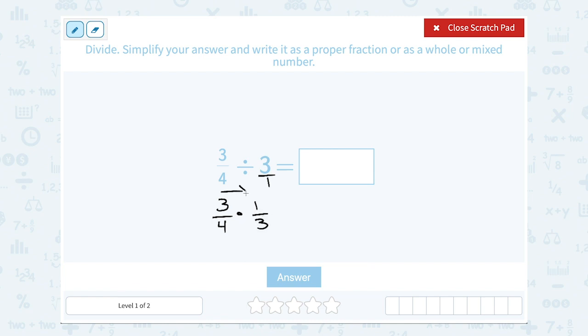Okay, and then we can multiply straight across the top and straight across the bottom. Now, if you notice, we have a factor of 3 on the top and the bottom. You can cancel them now to make the math a little easier, and then it's already simplified to 1 over 4.